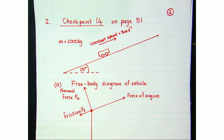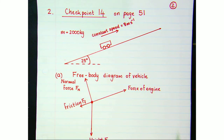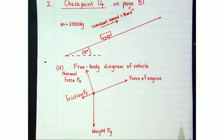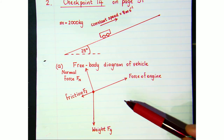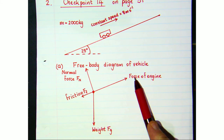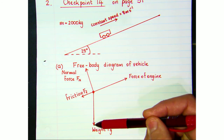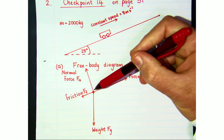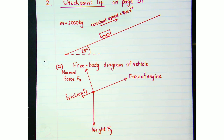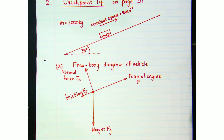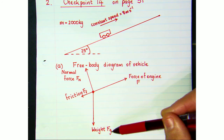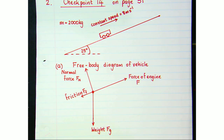I want to draw a free body diagram of the vehicle — in exams we draw free body diagrams rather than force diagrams. We have the forward force of the engine up the slope, friction opposing that motion, the gravitational force acting vertically downwards, and the normal force acting perpendicular to the slope. Make sure all forces are labelled with words and symbols, because you'll use those in any equations that follow.